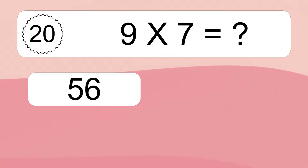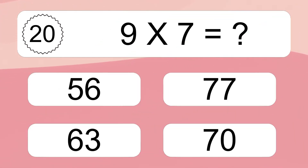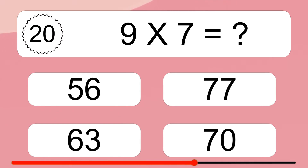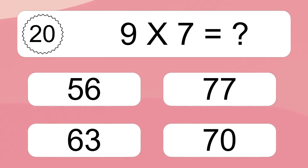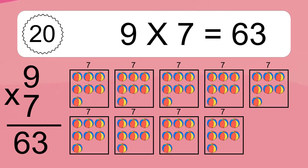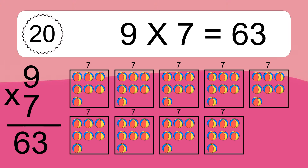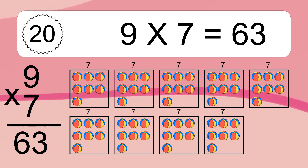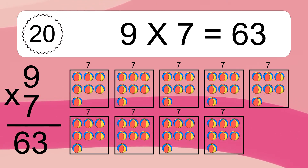9 times 7 equals what? 9 times 7 equals 63. We have 9 boxes, and each box has 7 colorful balls inside. If you count all the balls in all the boxes together, you will have 9 times 7 balls. This equals 63 balls.